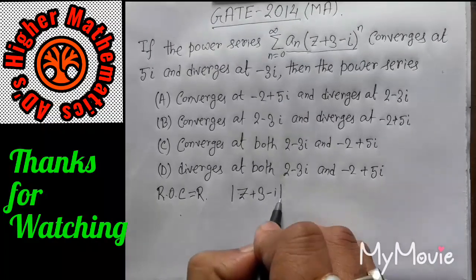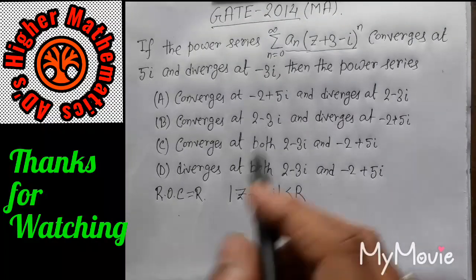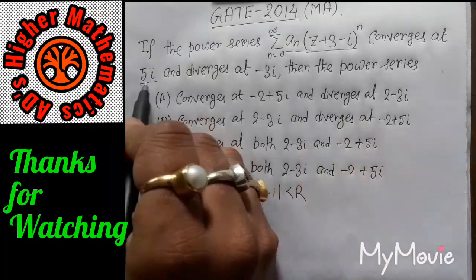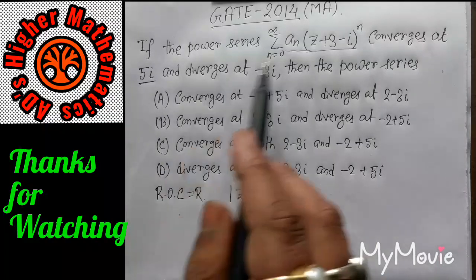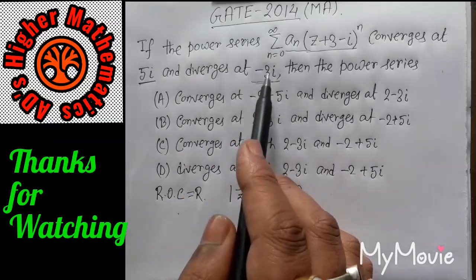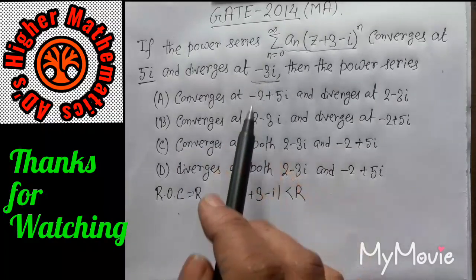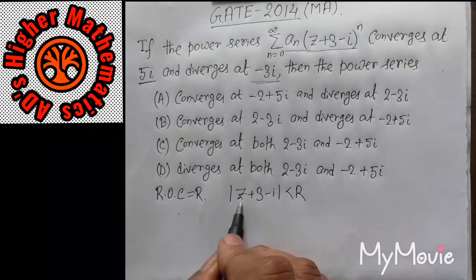This series will converge for all Z which satisfies the inequality |Z + 3 − i| < R. The given condition is that it converges for Z equal to 5i, so Z equals 5i satisfies this inequality. And the series diverges at minus 3i, meaning Z equals minus 3i does not satisfy this inequality.